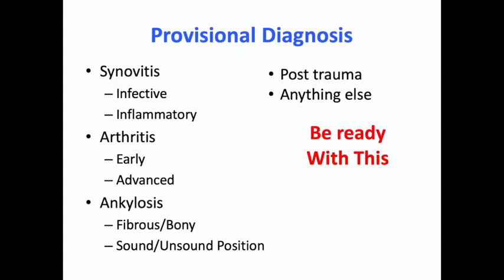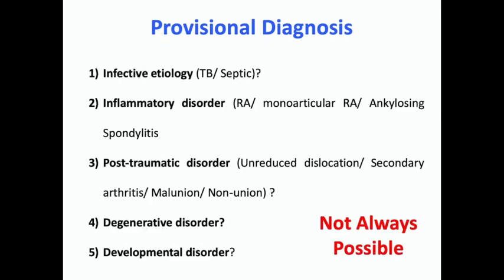Having gone through your history cycle, be ready with a provisional diagnosis. The examiner might ask — or even in a clinic, you want to come to some provisional diagnosis at the end of history. In an adult it could be ankylosis, arthritis, synovitis, a post-traumatic situation, or something else. Do not jump to a very specific detailed diagnosis on the basis of history alone. A common diagnosis could be a fibrous ankylosis in an unsound position, maybe of infective etiology — but spelling out a very specific diagnosis is not really possible with just history.